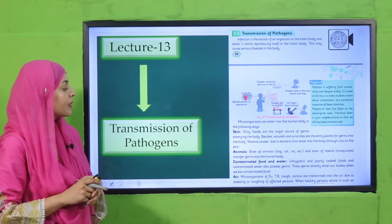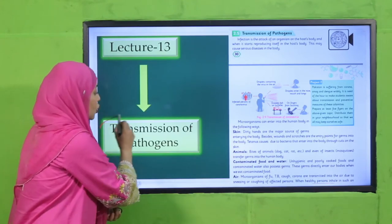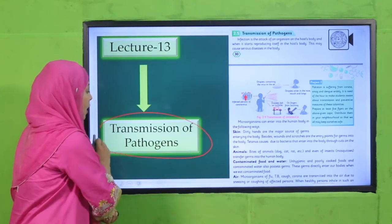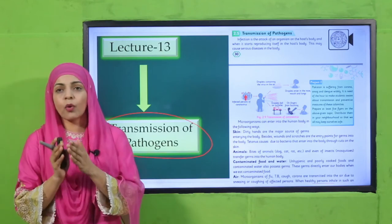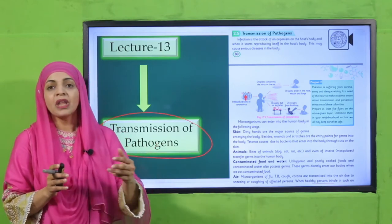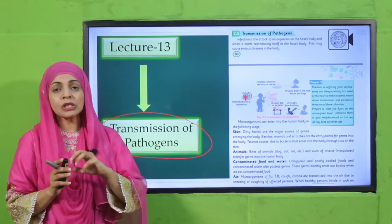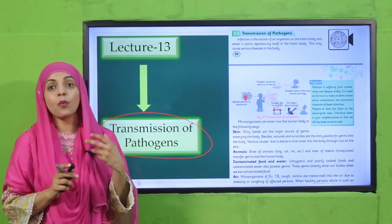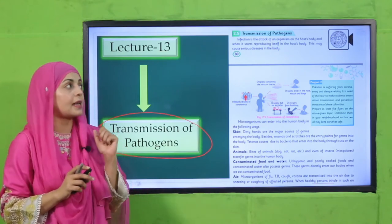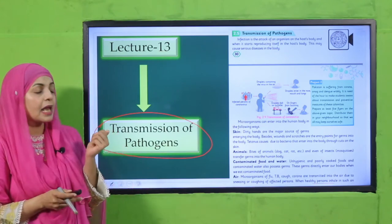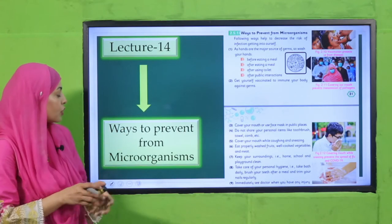Then we will move forward towards lecture number thirteen, where we will discuss the transmission of pathogens — kaisi jo hai wo ek jagah se doosri jagah pathogens transfer hote hain — what are the different causes of their transfer. This will be discussed in lecture number thirteen.